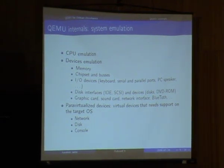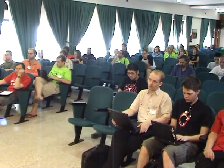There are two main modes in QEMU. The first is system emulation, which is based on CPU emulation. But to really run an OS, you need the CPU and some devices. So there is also device emulation — it emulates memory, chipset, buses, I/O devices like keyboards, serial and parallel ports, the PC speaker, disk interfaces (either IDE or SCSI) with hard drives or DVD-ROMs, graphic cards, sound cards, network interfaces, USB emulation, and Bluetooth emulation. With all those devices and CPU emulation, you are able to run an unmodified OS directly under QEMU.